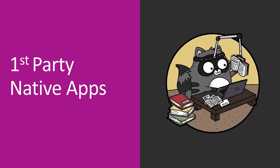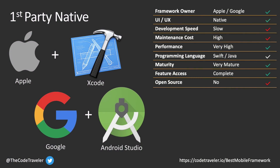Let's start by talking about first-party native apps. These are the tools created by the creators of iOS and Android, who are Apple and Google. Apple makes iOS and also makes the Xcode development toolkit that allows you to create native iOS apps in Objective-C and Swift. Google, who makes Android, has Android Studio that allows us to make native Android apps in Java and Kotlin. The benefit of using first-party native apps is we get a native UI/UX — buttons look like iOS buttons on iOS, and on Android they look like Android buttons. Gestures are all baked in; we get that for free.